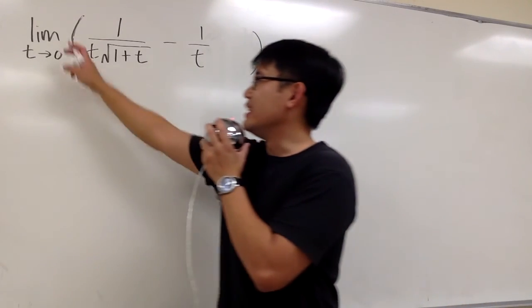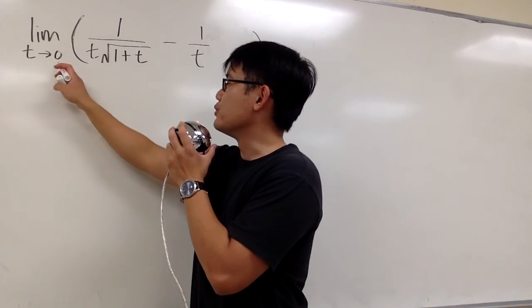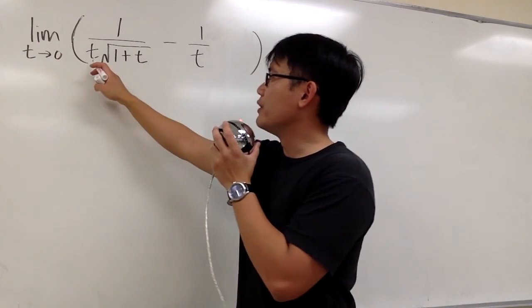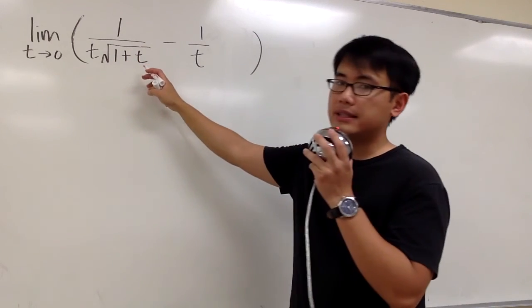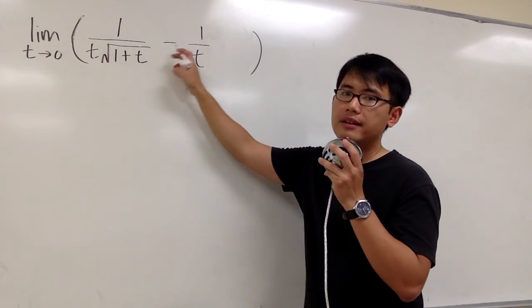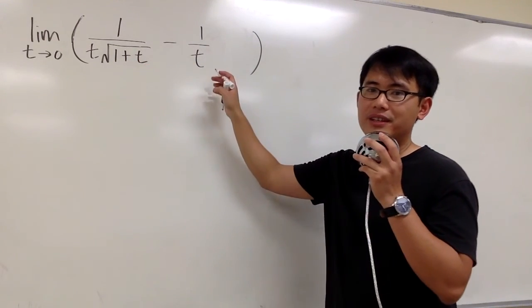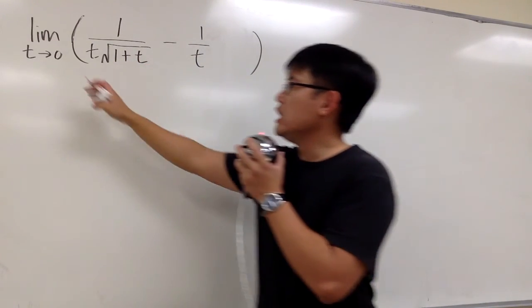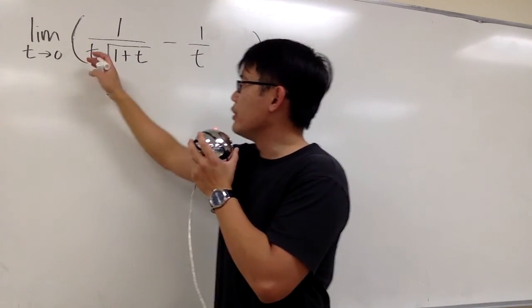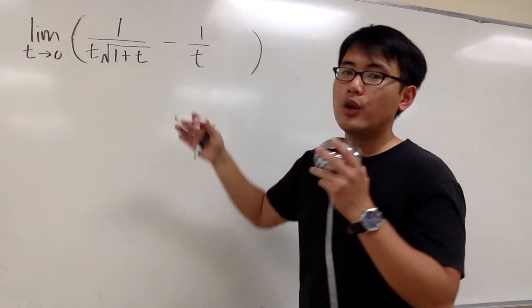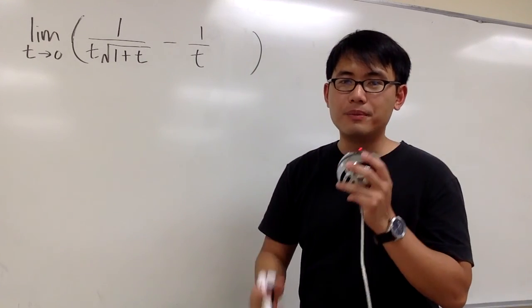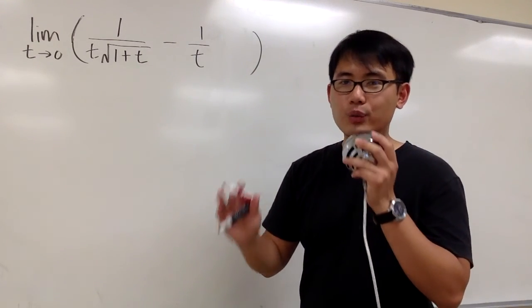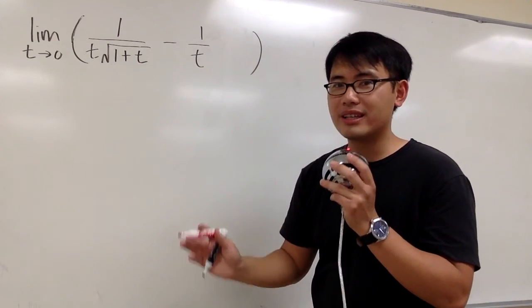We are going to compute the limit as t goes to 0 of 1 over t times the square root of 1 plus t, minus 1 over t. If we plug 0 into all the t's, we are going to end up with an indeterminate form. That means we have to do more work.